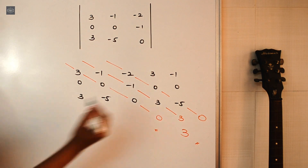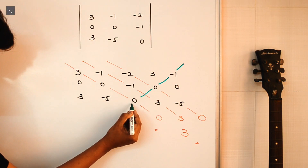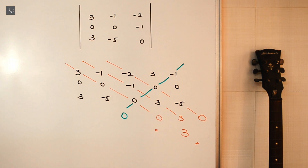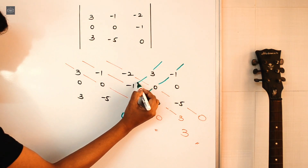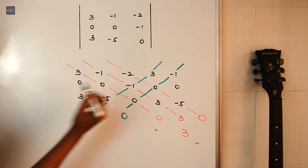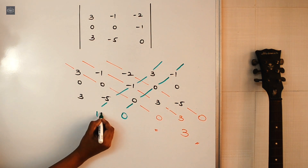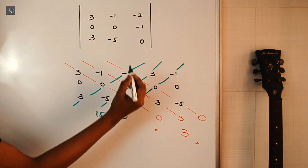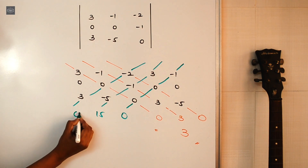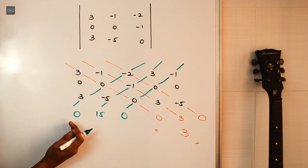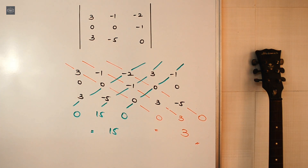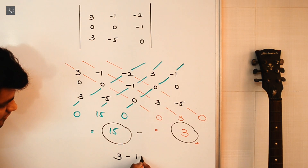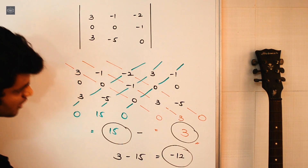Now we go the other way around and consider the elements along the backward diagonals. Multiply the first one: -1 into 0 is 0, and 0 into 0 is 0. For the next backward diagonal: 3 into -1 is -3, and -3 into -5 is +15. For the last one: -2 into 0 is 0, and 0 into 3 is 0. Adding these: 0 plus 15 plus 0 equals 15. Finally, take the first sum minus the second: 3 minus 15 equals -12. That's the final answer.